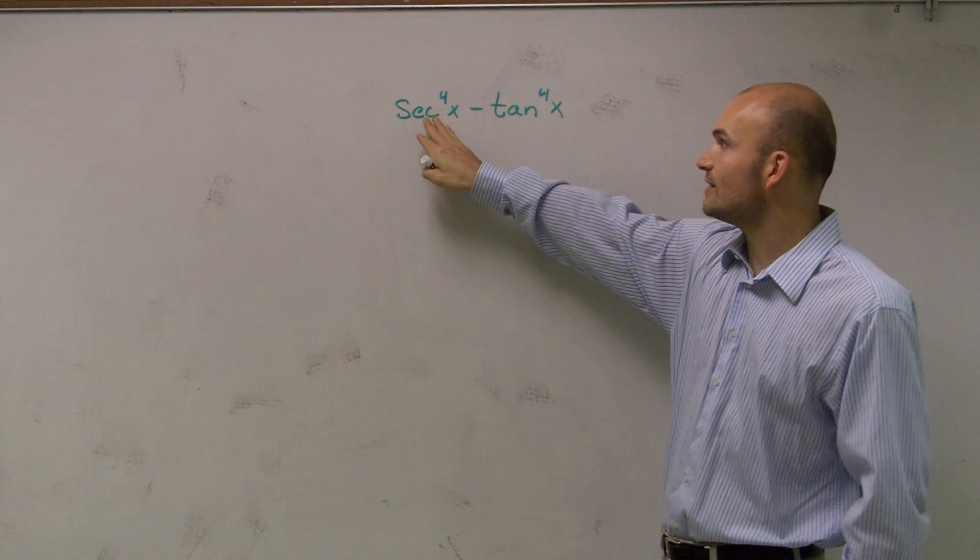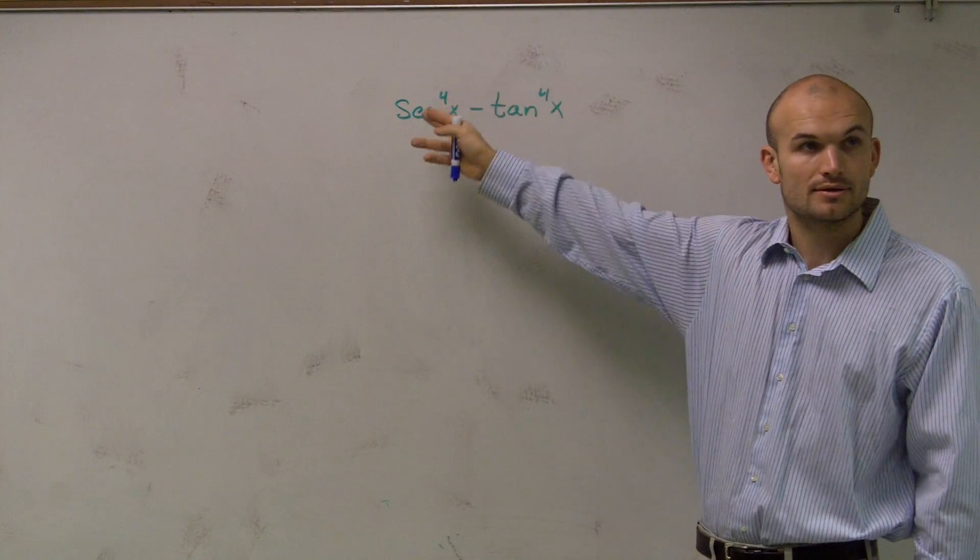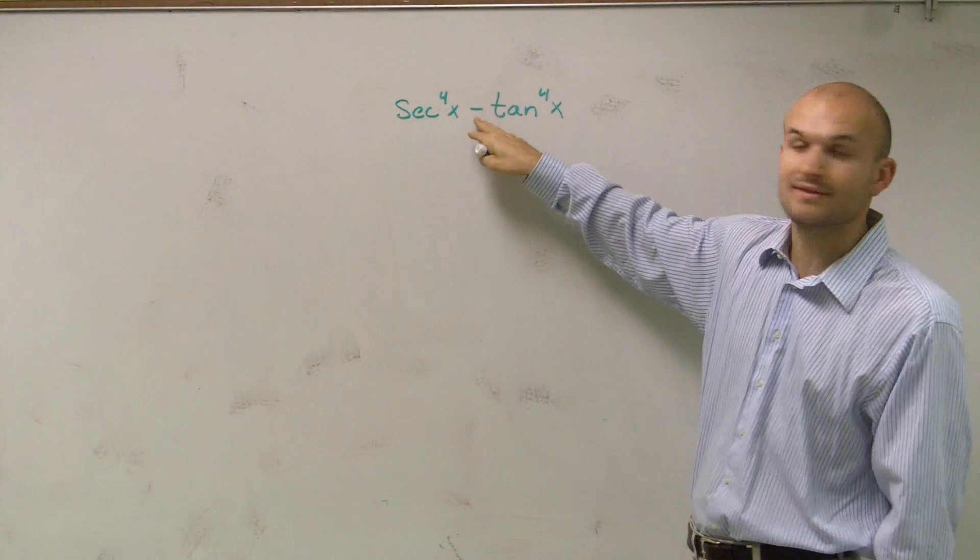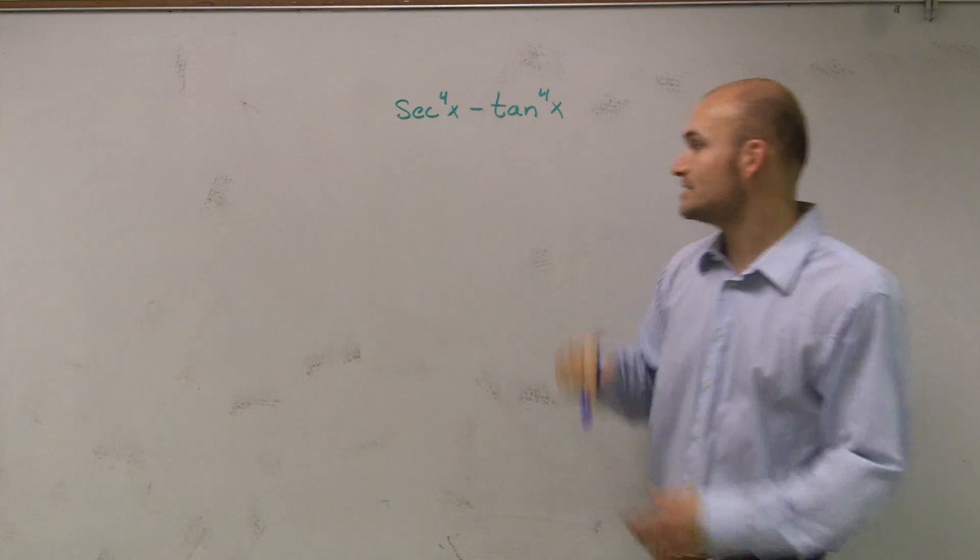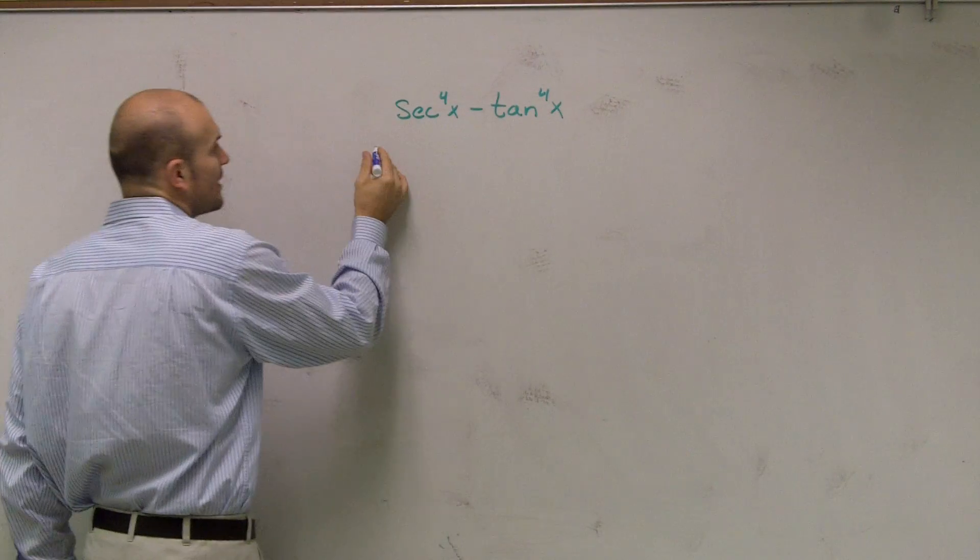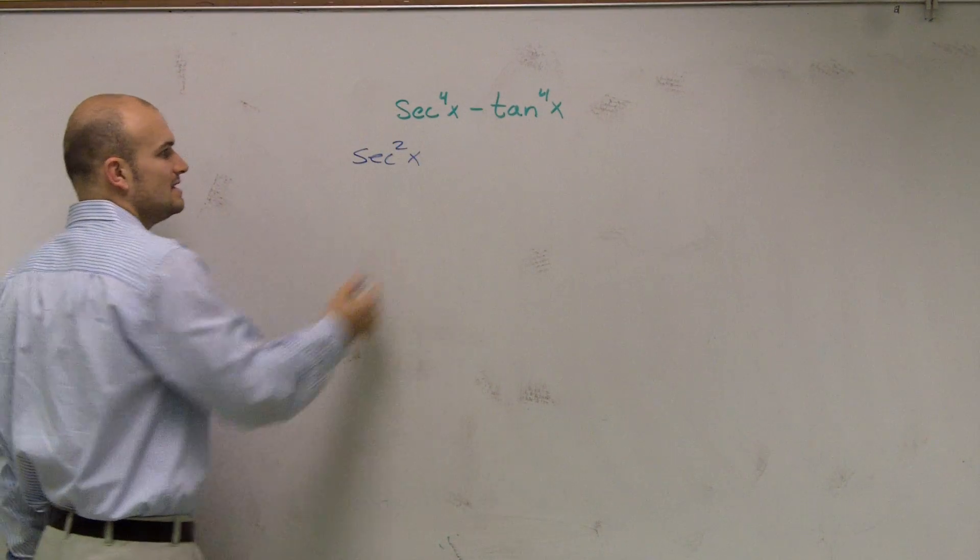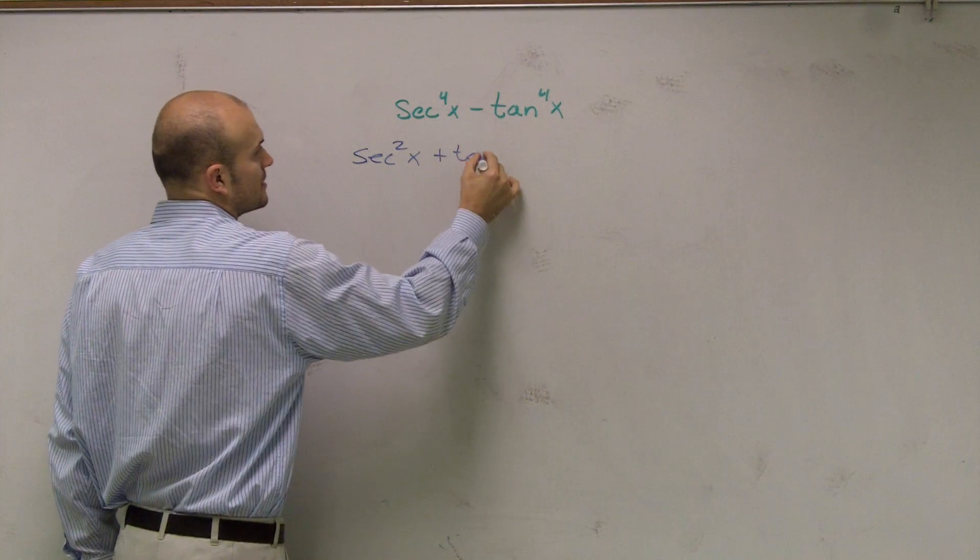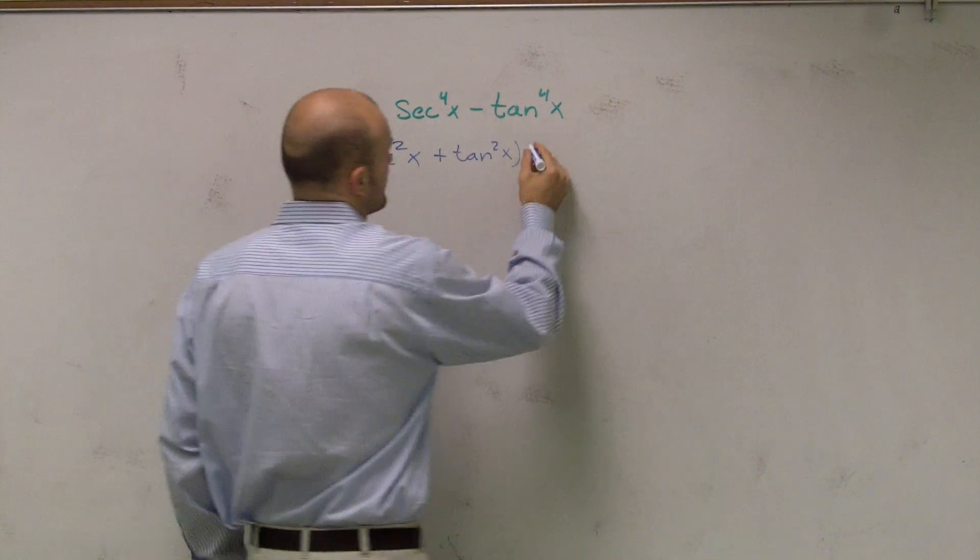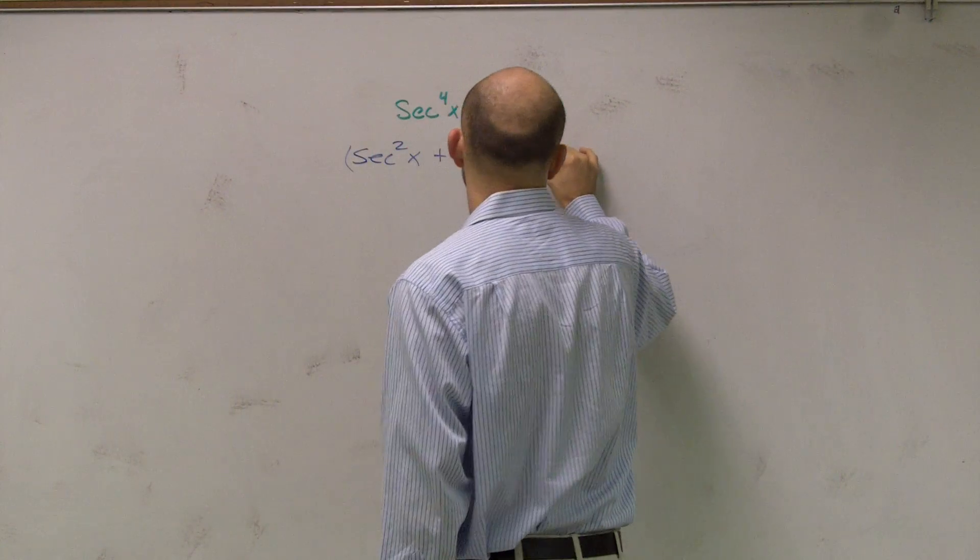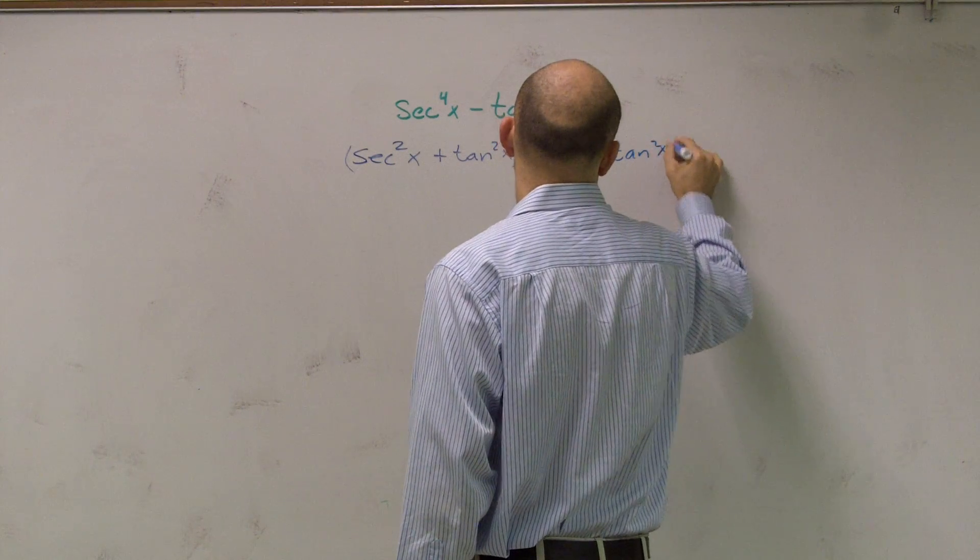So the way that I looked at this is whenever I see anything to a square power, and there's a difference, I'm always thinking of my difference of two squares. Whenever I have two square numbers and there's a difference of them, I can write this as a difference of two squares. Now, since these are to the fourth power, I'm going to have secant squared plus tan squared of x, and that's a four marker, times secant squared of x minus tan squared of x.